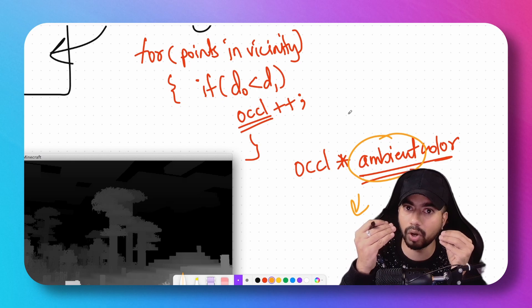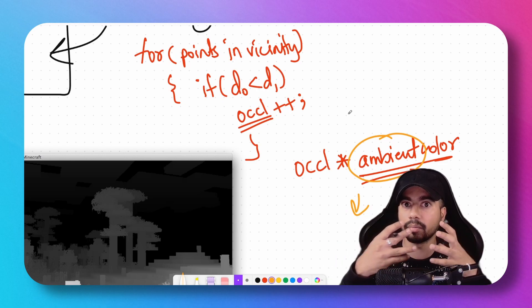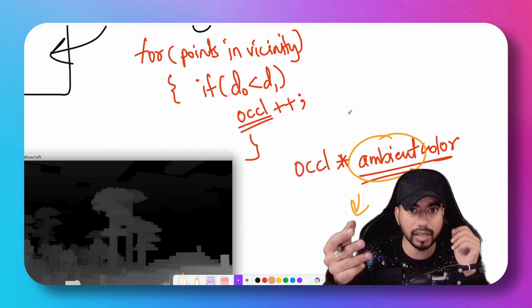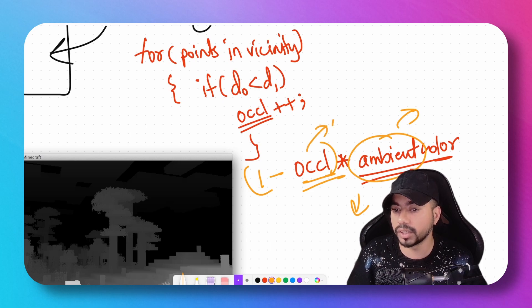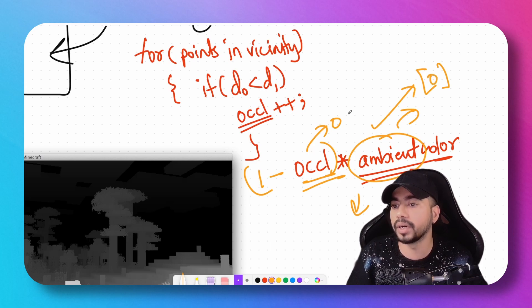...color. So if the occlusion is zero, then the ambient light would be added completely. If the occlusion is one, then there would be no ambient light. So this is the algorithm behind ambient occlusion. But there is a big problem here...